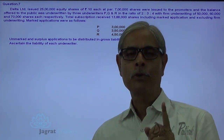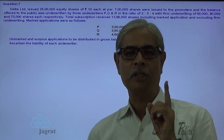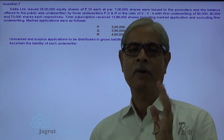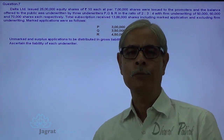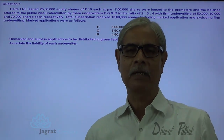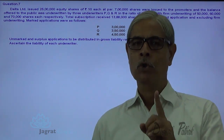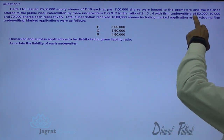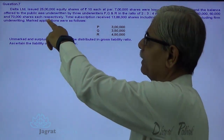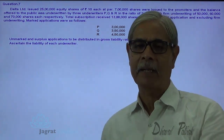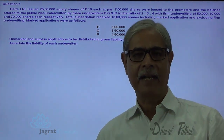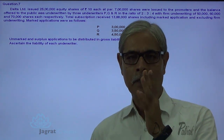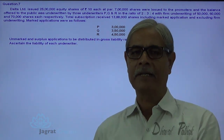We are going to give a credit for firm underwriting while determining the net liability of the underwriters. So the firm underwriting of 50,000, 60,000 and 70,000 shares respectively — we are going to give a credit for firm underwriting to the specific underwriters.